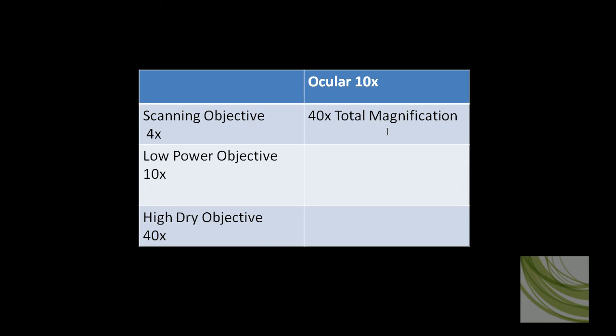Then we'll look at the low power objective, which has a 10x magnification, 10 times 10 is 100. So when you're looking through this lens or objective, everything is about 100 times larger than it really is.